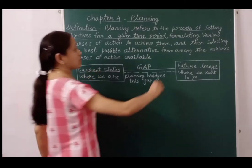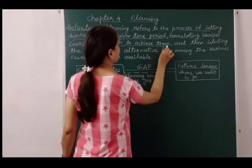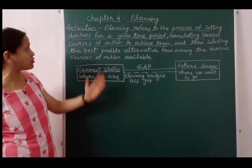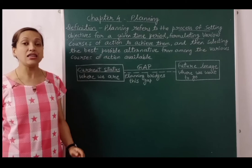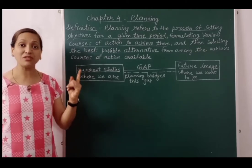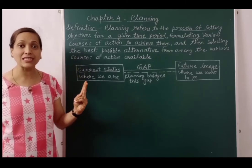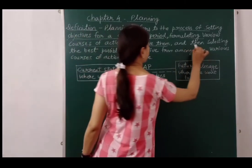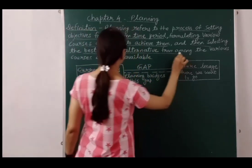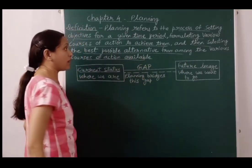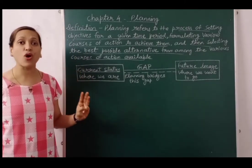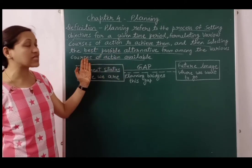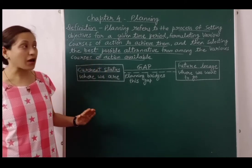The second part is formulating various courses of action to achieve the objective. For 5% profit increase, we can increase selling price, increase total sales, or decrease cost of production. And then selecting the best possible alternative from among the various courses of action available — we must select the most suitable option for our organization and execute it.